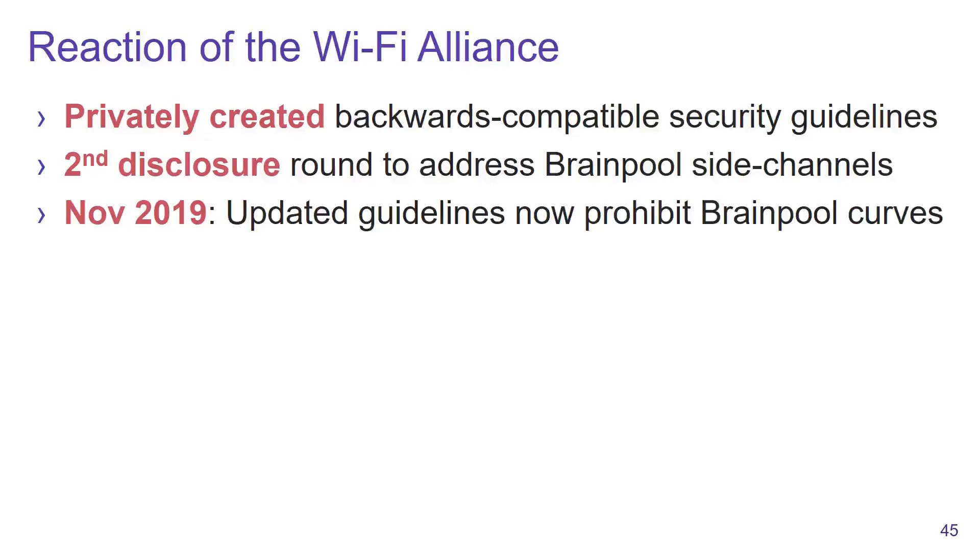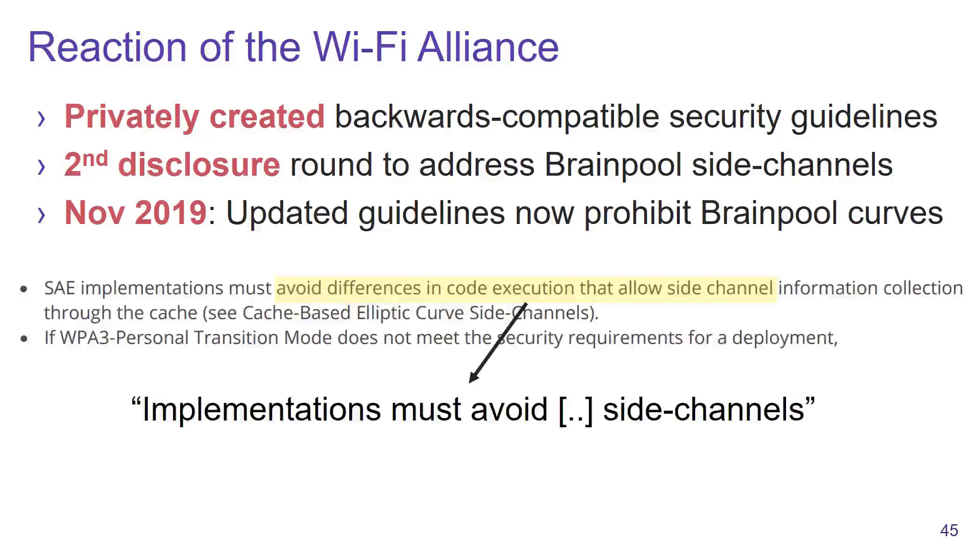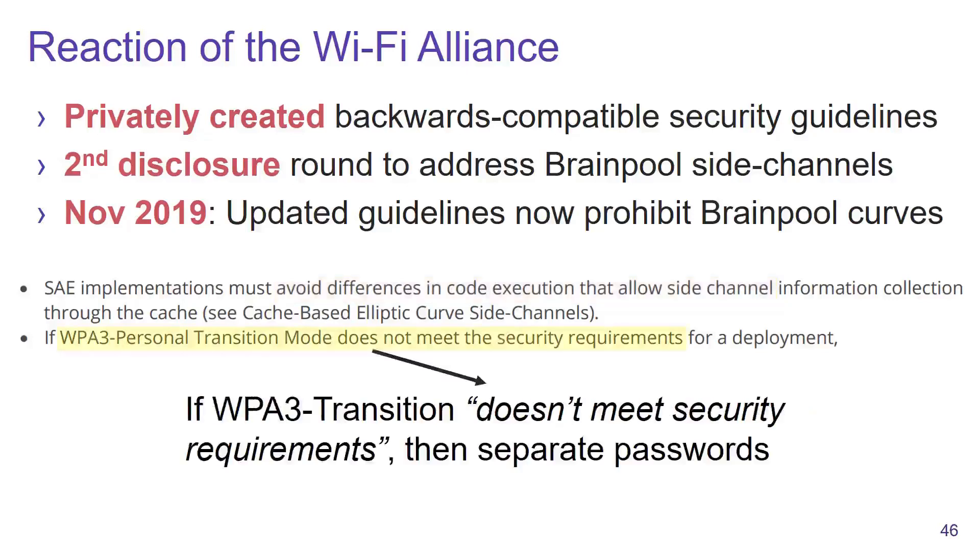In response, at the end of last year they released new security guidelines that now prohibit the use of Brainpool curves. Their guidelines are rather vague though. For example, they mentioned that implementations must avoid side channel leaks, however this is hard to do without more explicit guidelines. They also say that if WPA3 transition mode doesn't meet security requirements, then basically don't use it. In other words, they don't address the underlying issue.